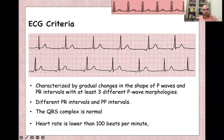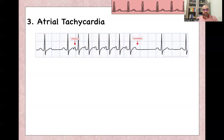This is a continuous ECG for lead 2. You can see different P-wave morphologies — upright, flat, inverted — and varying PR intervals. This is wandering atrial pacemaker because the heart rate is less than 100 beats per minute. If more than 100 beats per minute with the same characteristics, it would be called multifocal atrial tachycardia.